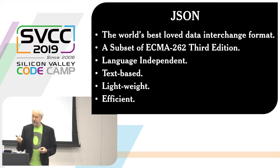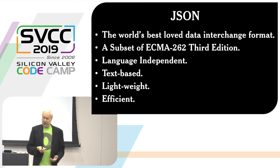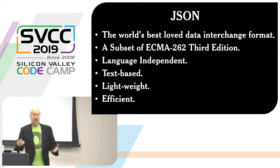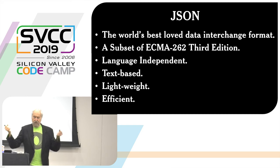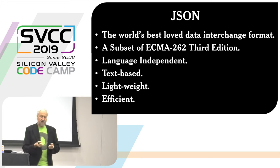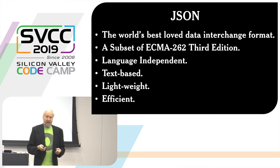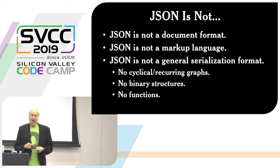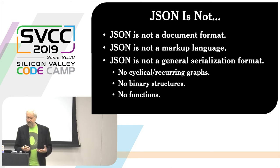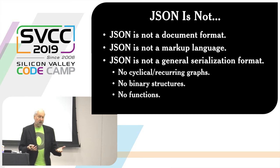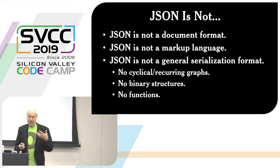JSON is a subset of ECMA 262, the third edition, which used to be the standard for JavaScript. Even though it's based on JavaScript, it is language independent, so JSON works with all programming languages. Any pair of programs written in any two languages can communicate very effectively using JSON. It is text-based, lightweight, and very efficient. It is not a document format, not a markup language, not even a general serialization format. For example, JSON doesn't support directly cyclical or recurring graphs. It doesn't support binary structures like blobs or even binary numbers, and it doesn't support functions.